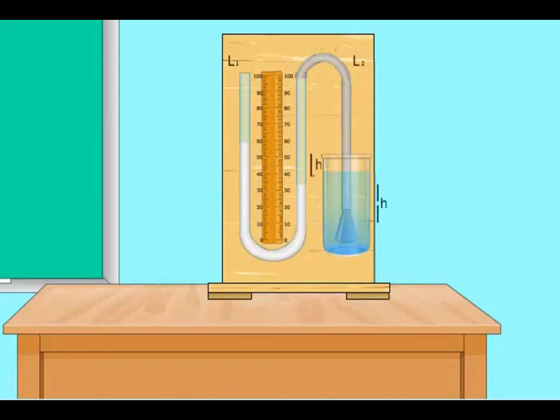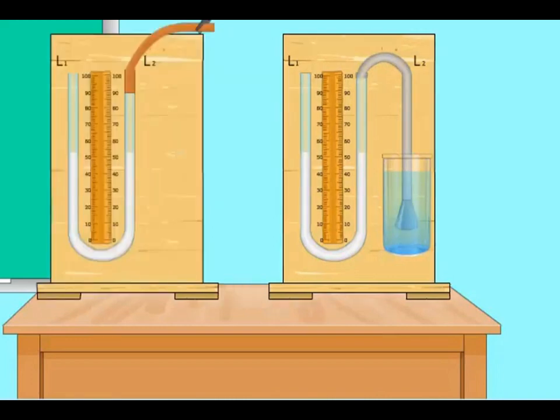The difference between the readings on the graduated scale is the height. The pressure of the water column can be calculated by using formula P equals ρgh. Thus, you have learnt about the pressure measurement using a U tube manometer.